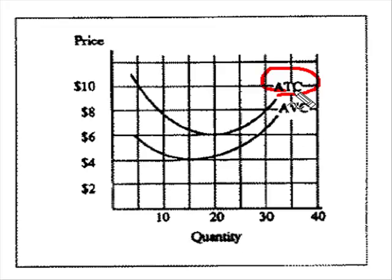we're only concerned with ATC. And that ATC actually occurs at this point at a 20-unit level of production, and it just so happens that that minimum average total cost is $6.